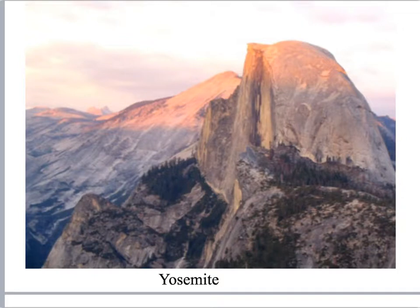This is Yosemite National Park, located in California. This entire picture is one massive batholith. This is a mountain called Half Dome — this is a pluton. Now half of the pluton is missing; over the years it cracked, fell, and came down.